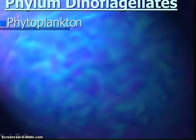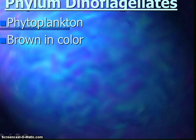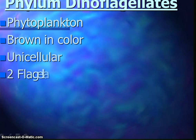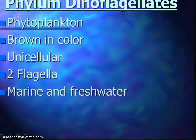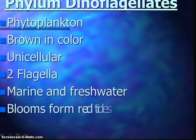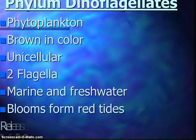Next we have the phytoplankton — dinoflagellates. There are about 1,100 species, and they typically are brown in color. They're unicellular and can be marine or freshwater. They have two flagella: one moves the algae through the medium, and one spins the cell on its axis. They do form what are called red tides in warm coastal water, and these release toxins that kill many fish.